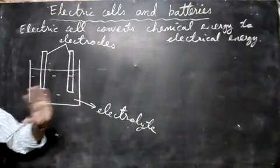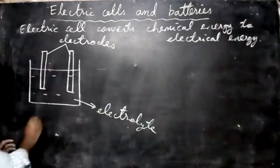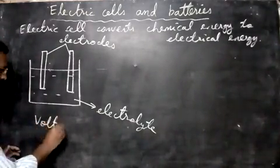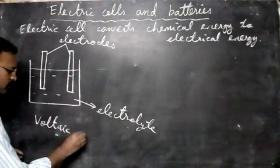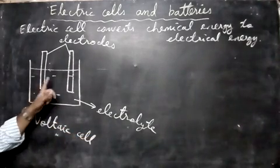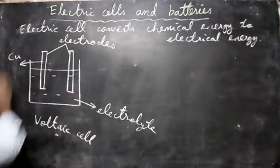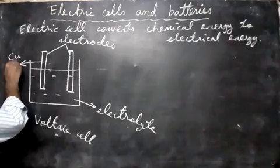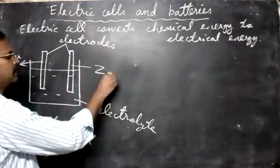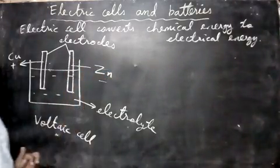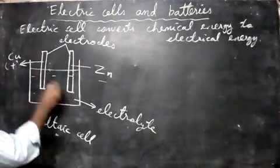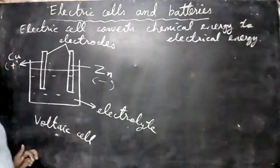So let us take a simple voltaic cell. You must have two electrodes here. This electrode you can make it as copper. Copper will be positive. And then this one is zinc. Zinc will be the negative.